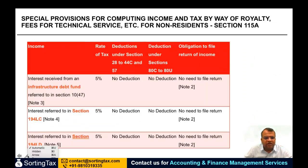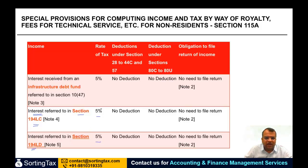Interest referred to in Section 194LC and Section 194LD — in both cases, 5% TDS applies. The taxability will be at 5% and accordingly the TDS will also be 5%. In both these cases, there is no deduction under Section 28 to 44 or Section 80 to 80C.